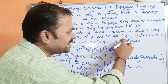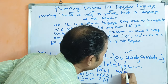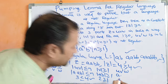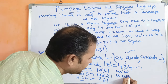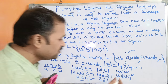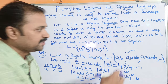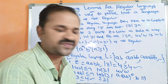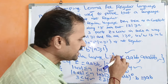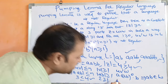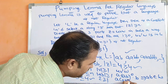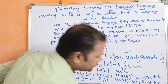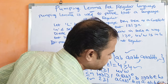For all i ≥ 0, UV^i W must be in L. Here U = A, V = AB, W = B. For i=0: A·(AB)^0·B = A·1·B = AB, and AB is present in the language. For i=1: A·(AB)^1·B = A·AB·B = AABB, which is present in the language. Both belong to L.